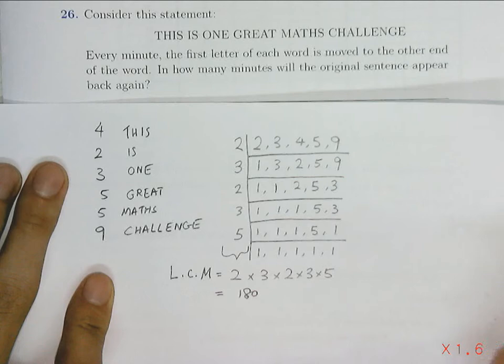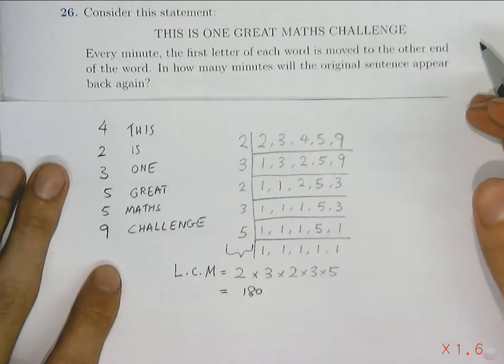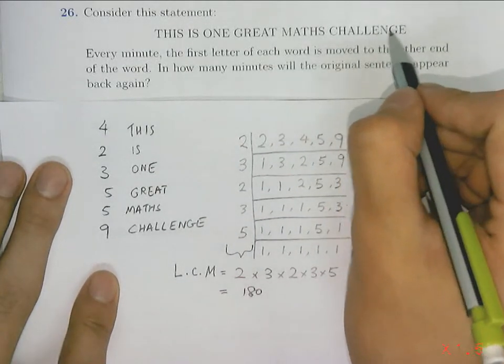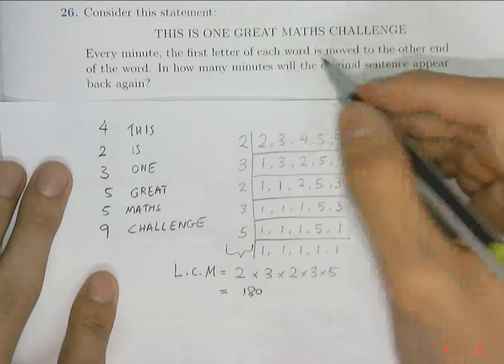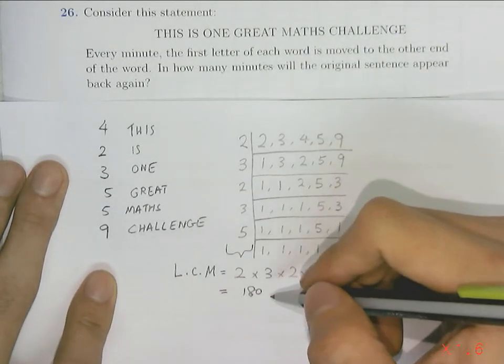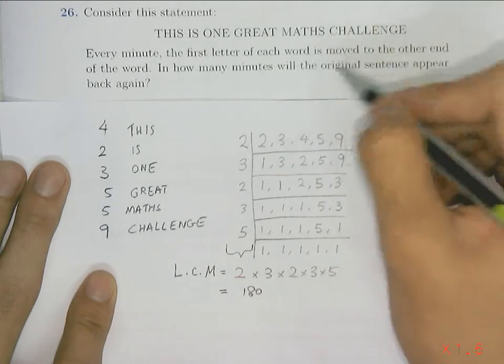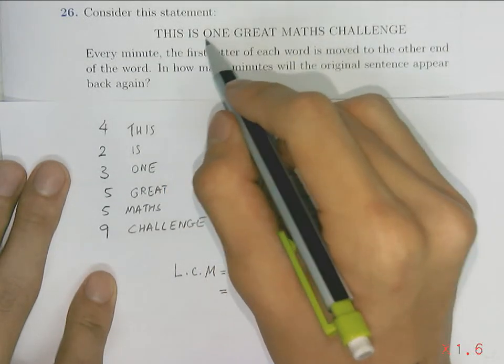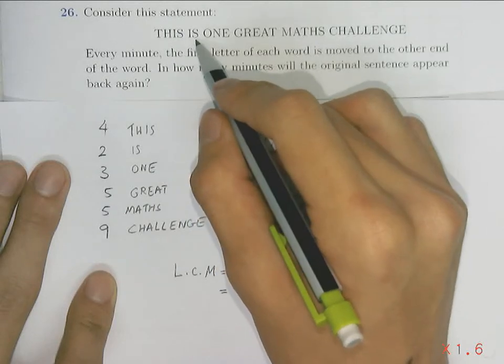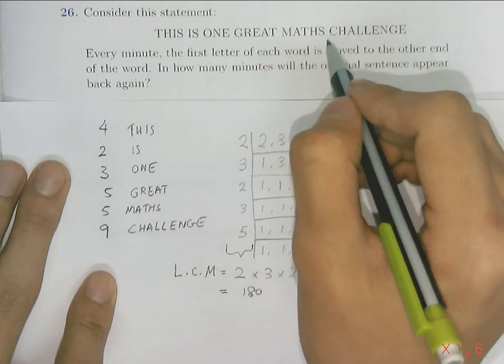So that means after 180 minutes - each minute one letter will move to the back - so after 180 minutes, all the letters after shifting will move back to its original word. That means 'this is one great maths challenge.'